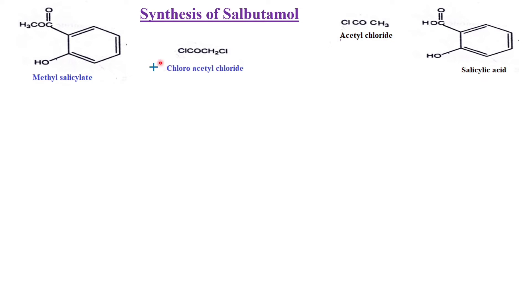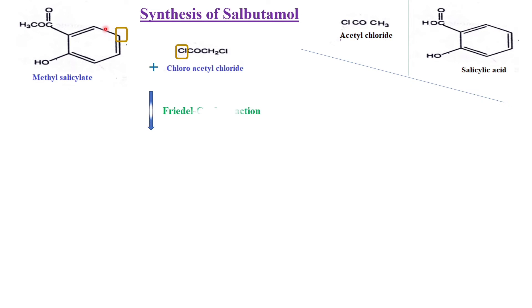By the addition of these two, a Friedel-Crafts reaction occurs. In the Friedel-Crafts reaction, a hydrogen on the ring is removed as HCl by taking the chlorine from chloroacetyl chloride. That is why the COCH2Cl group is added to the ring and we obtain the corresponding product.